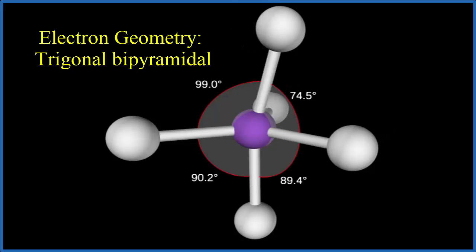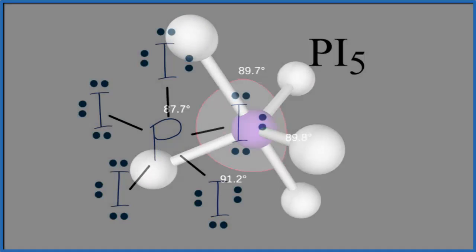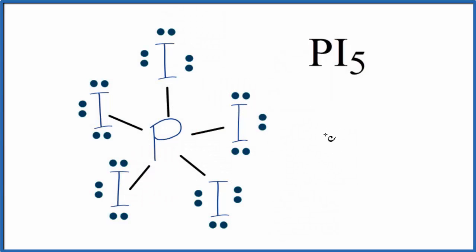We could also use the AXE notation to figure out the molecular geometry for PI5. A is the central atom, our phosphorus. X is the number of atoms attached to it—we have five iodine atoms. E is the number of lone pairs—we don't have any. You'll often see this written as AX5. If you look up AX5, you'll find a trigonal bipyramidal molecular geometry, just like we found before.